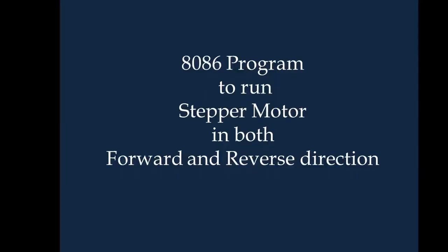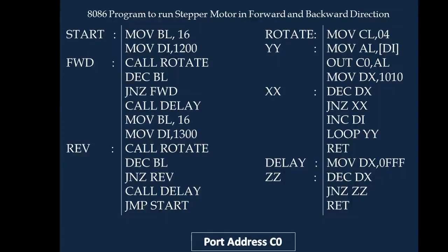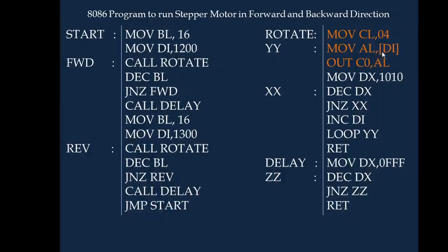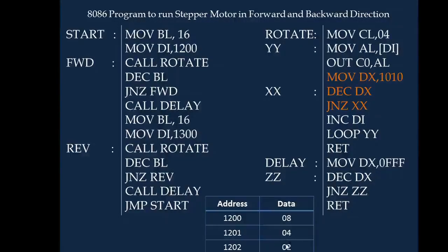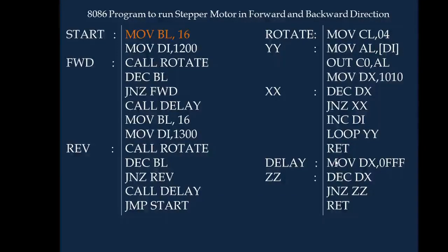Next we will see the program to run the stepper motor in both the forward and reverse direction. The port address is C0. The forward routine moves 4 values to AL and writes them to the C0 register, with a short delay between each step, then increments DI. So values 8, 4, 2, 1 are written sequentially. After sending all 4 values it returns. This acts as a subroutine called rotate. We also have a count of 16 hex in BL to determine how many times we want the 8, 4, 2, 1 sequence to be sent to the stepper motor.